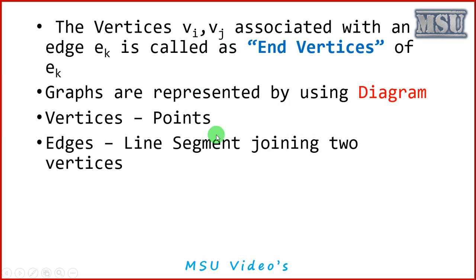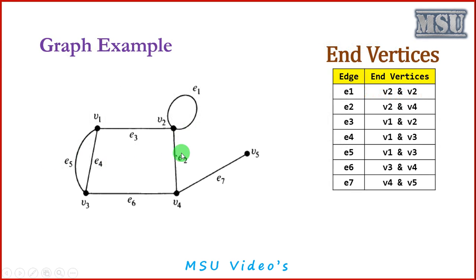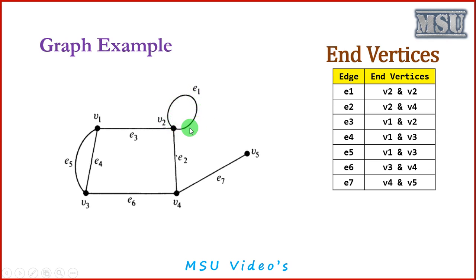Graphs are represented using a diagram where vertices are represented as points and edges are line segments joining two vertices. In this example of a normal linear graph, I have 5 vertices V1, V2, V3, V4, and V5, and 7 edges. For edge E1, the end vertices are V1 and V2. E1 is actually a self-loop starting from V2 and ending at V2 itself. For edge E2, the end vertices are V2 and V4.